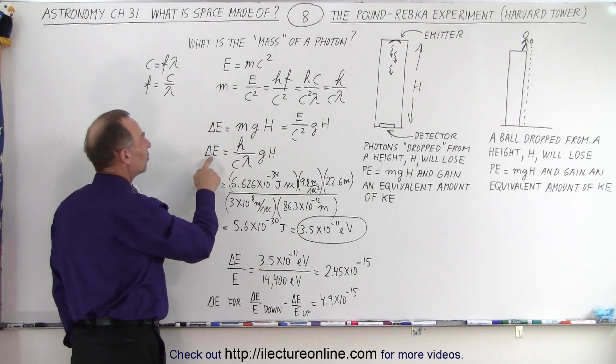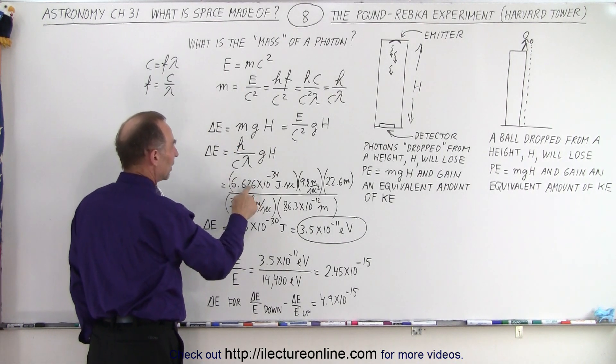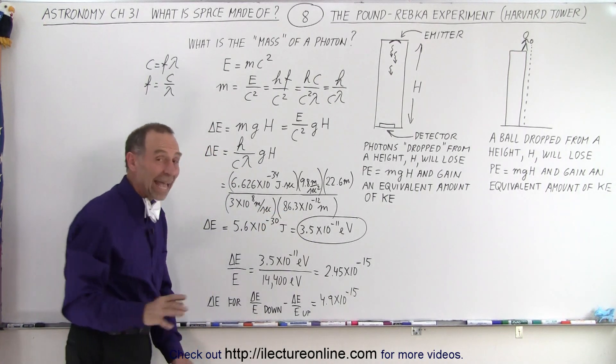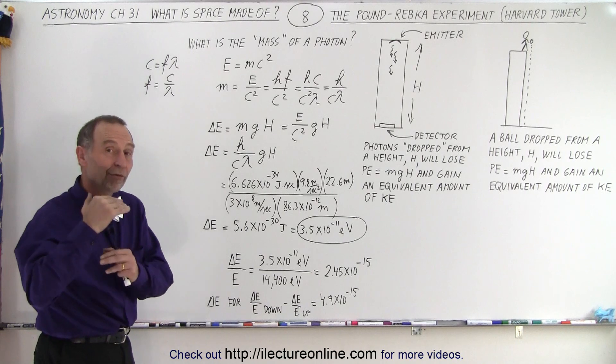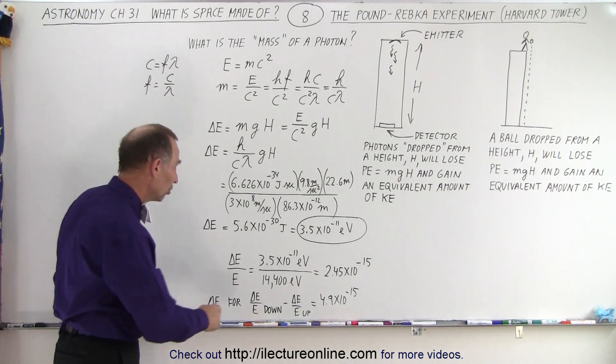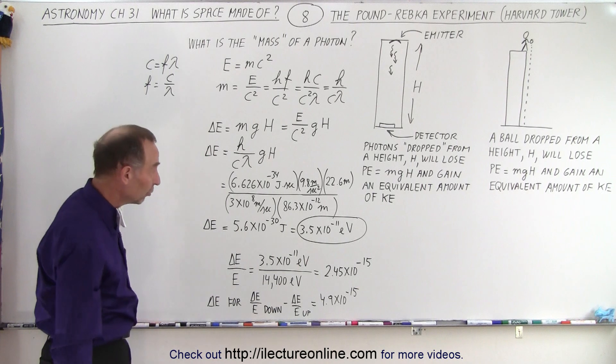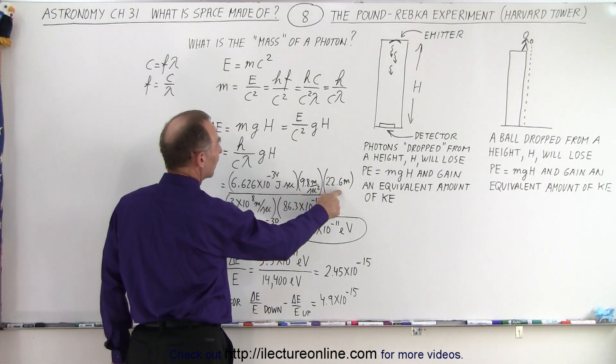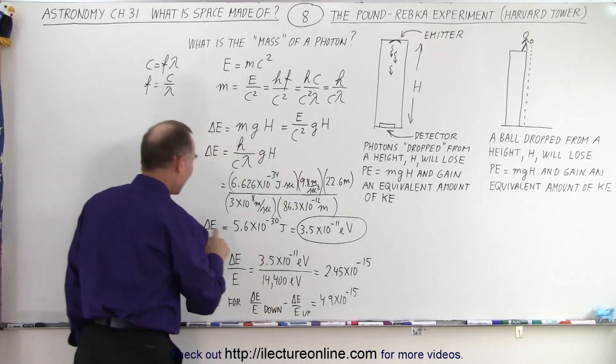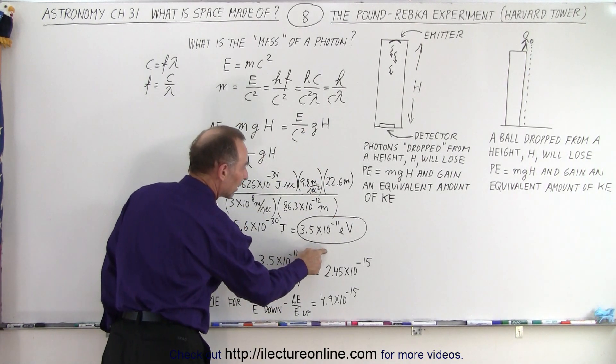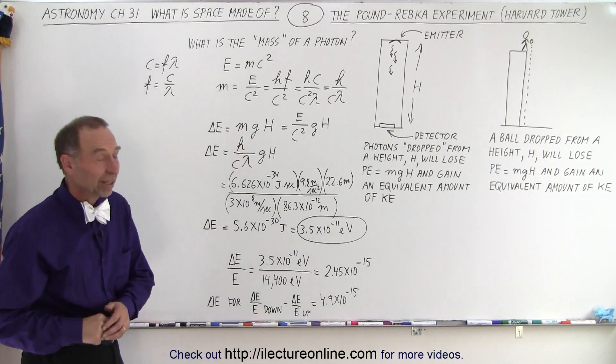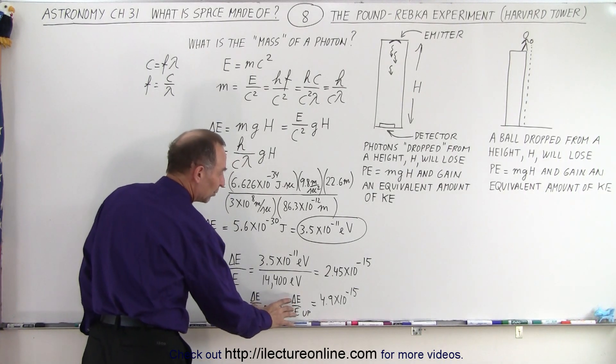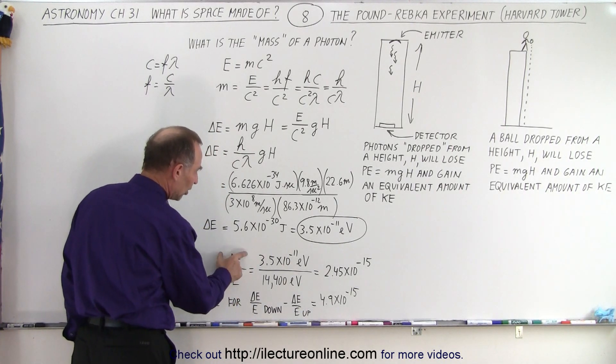So if you want to plug this in, the change in energy is Planck's constant divided by the speed of light divided by the wavelength of these photons. This is 86 nanometers, so those are very small wavelengths because they were very high energy photons. The energy of the photons was 14,400 electron volts. Then use the acceleration due to gravity, the height difference 22.6 meters, and the difference in energy in electron volts was 3.5 times 10 to minus 11 electron volts. That's not a lot of difference in energy.